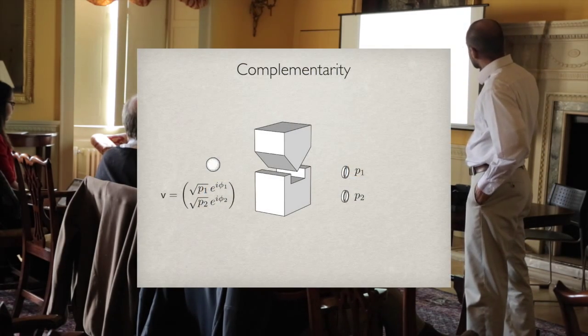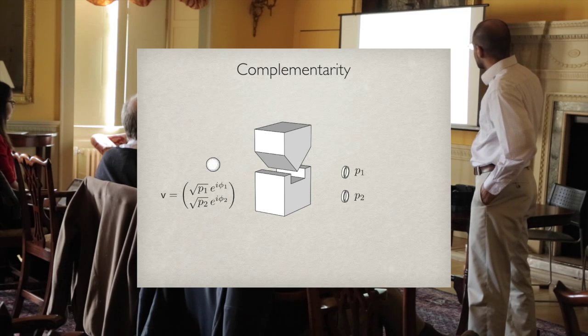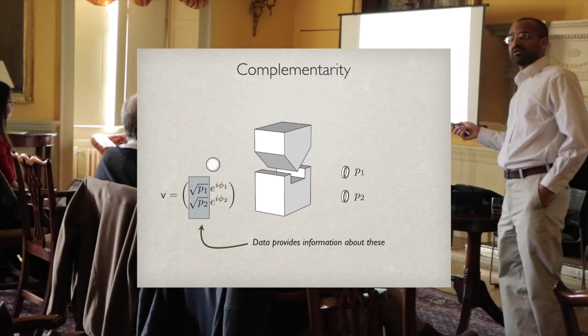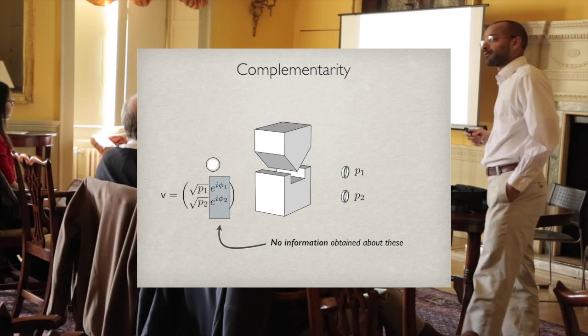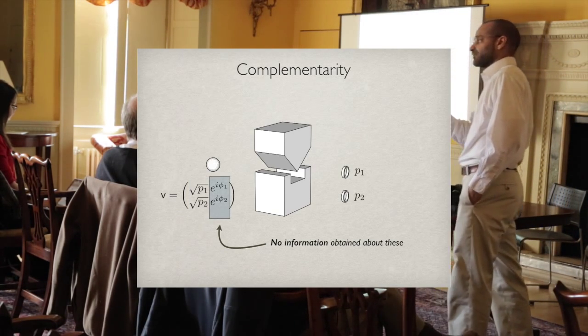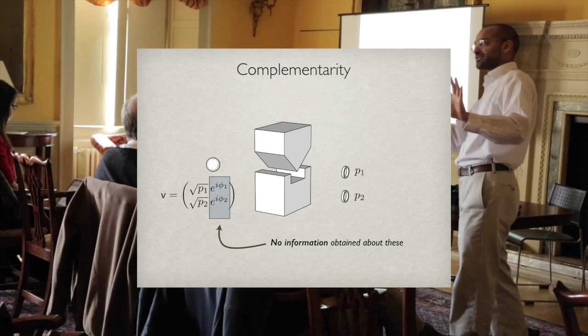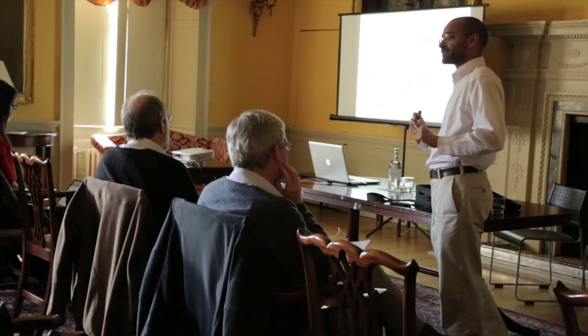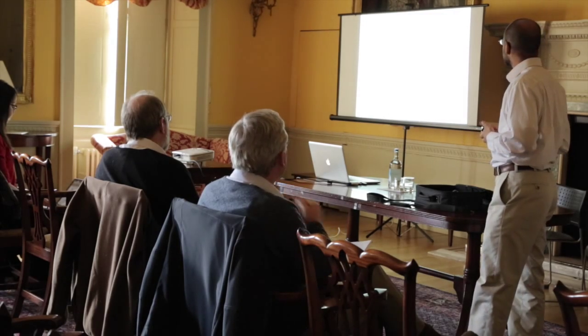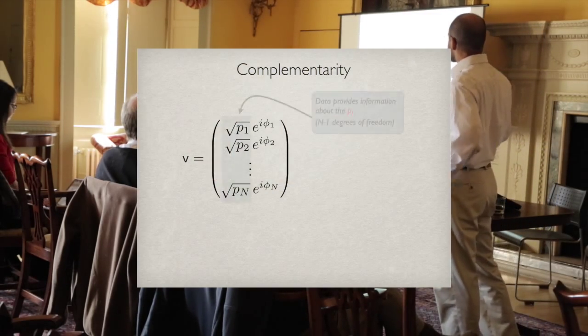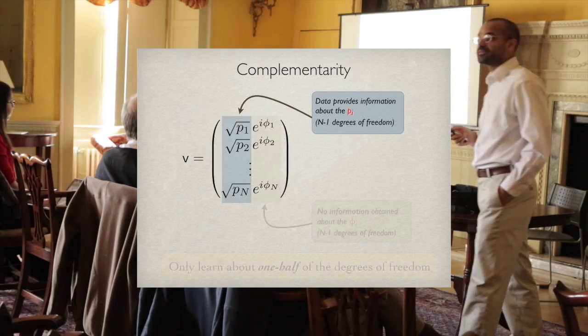Finally, the data we get from this experiment only tell us about P1 and P2. It doesn't tell us about phi 1 and phi 2 at all. The measurement provides only information about certain degrees of freedom at the expense of others. This is one way of formalizing Bohr's notion of complementarity.